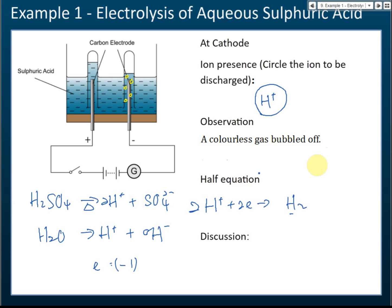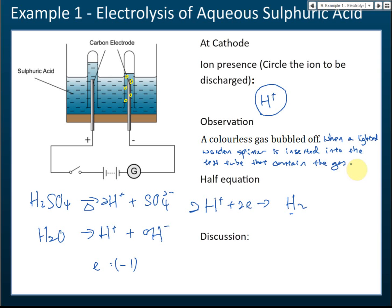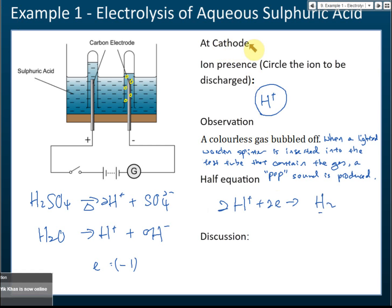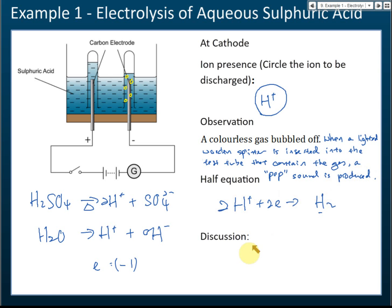For the gas test: when a lighted wooden splinter is inserted into the test tube containing the gas, a pop sound is produced. So at the cathode, the ions present are hydrogen ions, the observation is colorless gas bubbles off with a pop sound from the lighted splinter test, and the half equation is 2H⁺ + 2e⁻ → H₂.